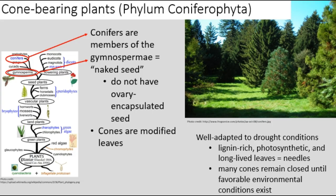Conifers are members of the Gymnospermii, which literally means naked seed, referring to the fact that gymnosperms do not have ovary-encapsulated seeds. Cone-bearing plants, phylum Coniferophyta, produce two kinds of cones: spore-containing cones and egg-containing cones, which are modified leaves. Conifers are well adapted to drought conditions, having lignin-rich photosynthetic leaves called needles that persist for several years. Furthermore, many cones remain closed until favorable environmental conditions exist, which may also take many years.